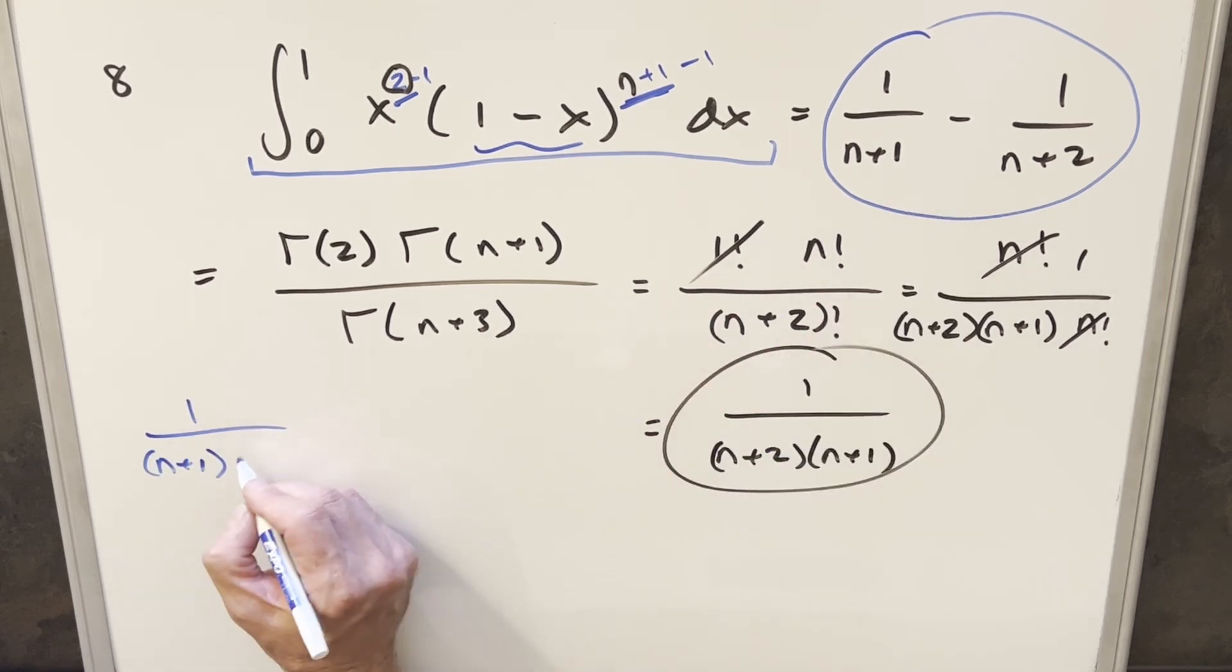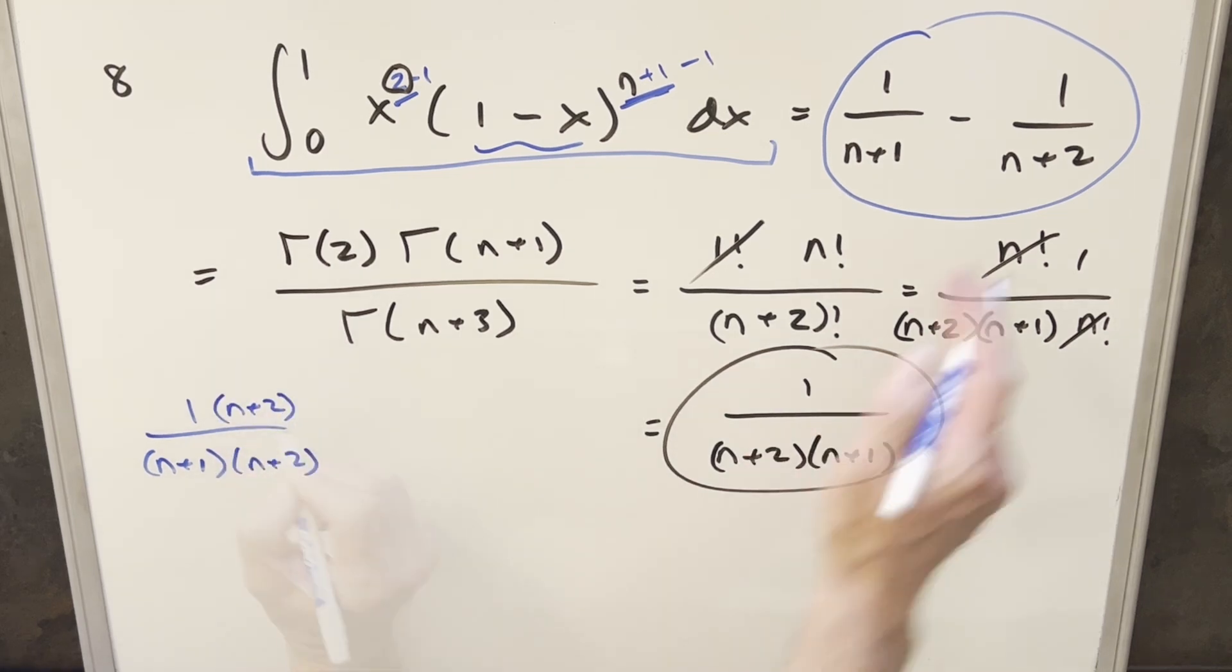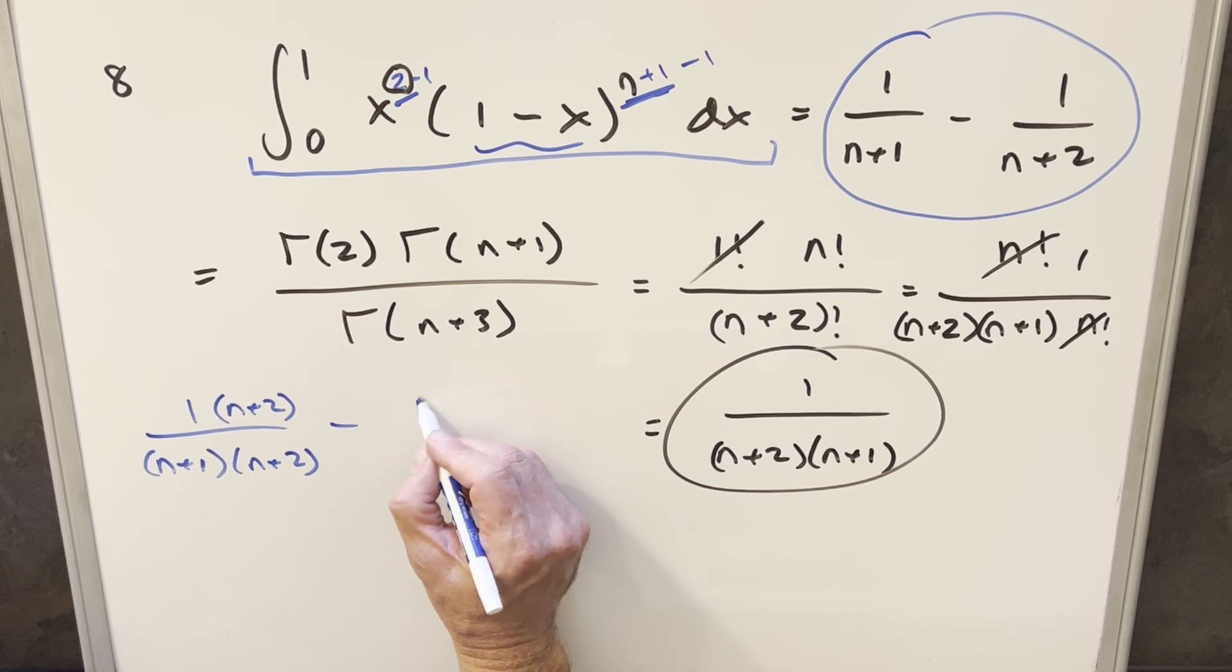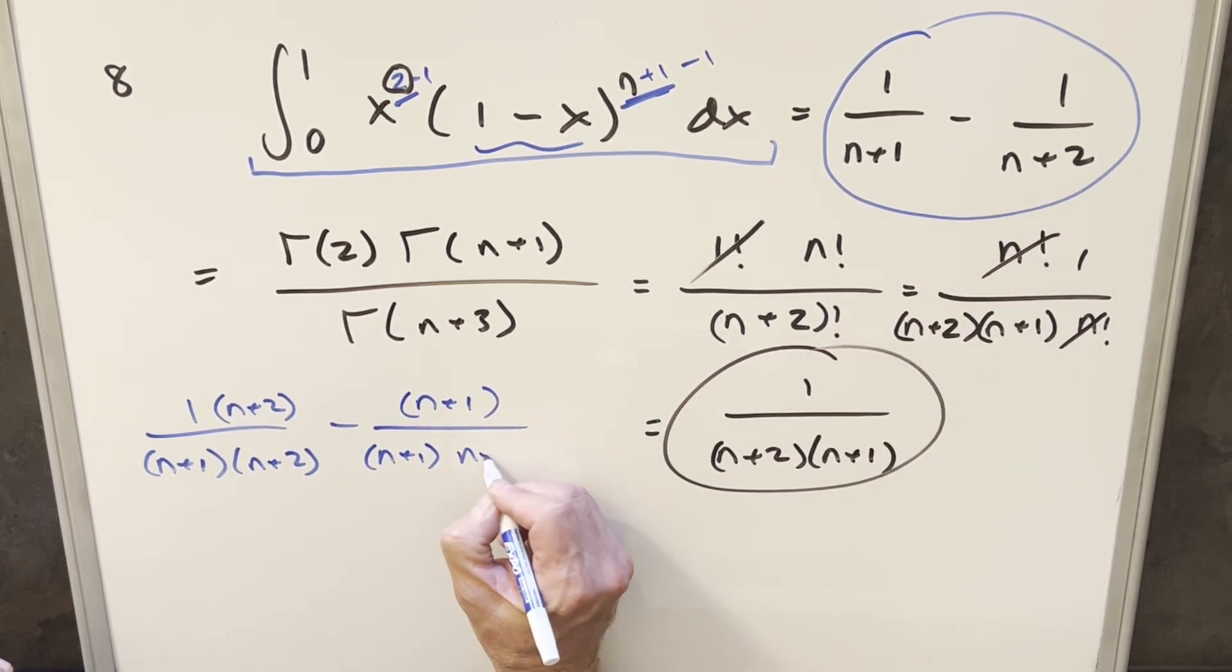Let's take this one and get a common denominator. So for 1 over n plus 1, I can multiply that first part as n plus 2 over n plus 2. And then for this here, for 1 over n plus 2, I can multiply in by n plus 1 over n plus 1 times the n plus 2.